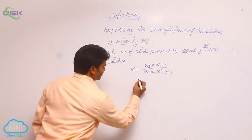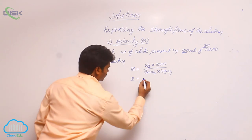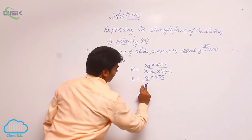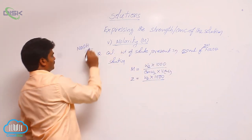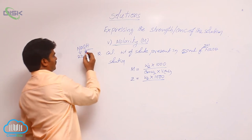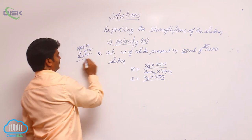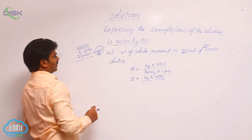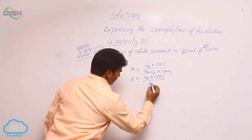Substitute the values. Molarity is given; weight of solute we do not know; into 1000 divided by gram molecular weight of solute. Here NaOH is the solute. For sodium, atomic weight is 23; for oxygen, 16; for hydrogen, 1; the sum is 40. That means the gram molecular weight of NaOH is 40 grams.